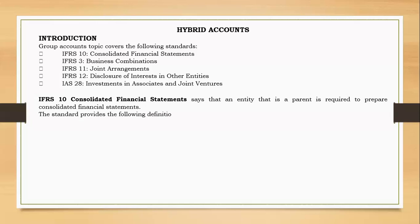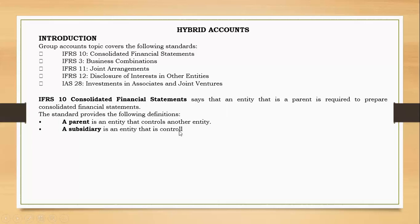This standard provides the following definitions. A parent is an entity that controls another entity — the keyword here is control. A subsidiary is an entity that is controlled by another entity. For example, if Company A owns 70% of shares of Company B, Company A is the parent and Company B is the subsidiary of Company A.